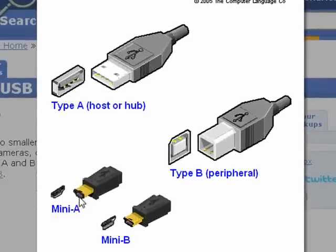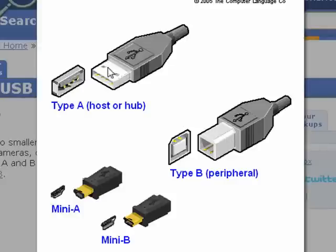And USB, there's a couple of varieties now — the Mini A, the Mini B, used on some cell phones, and then this Type B on printers, and this is the most common one. So that's a USB connection and port, and that's all there is to it.